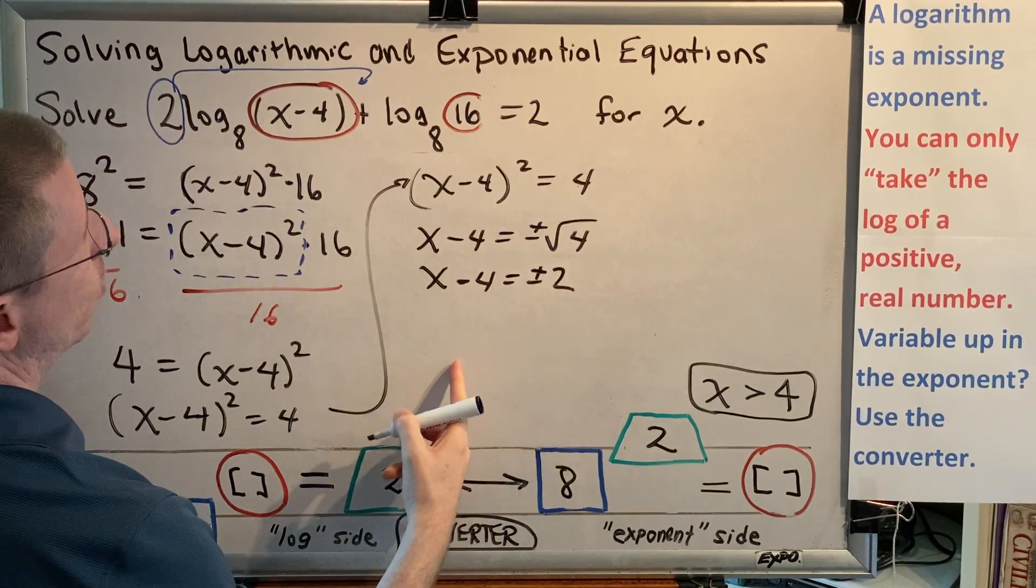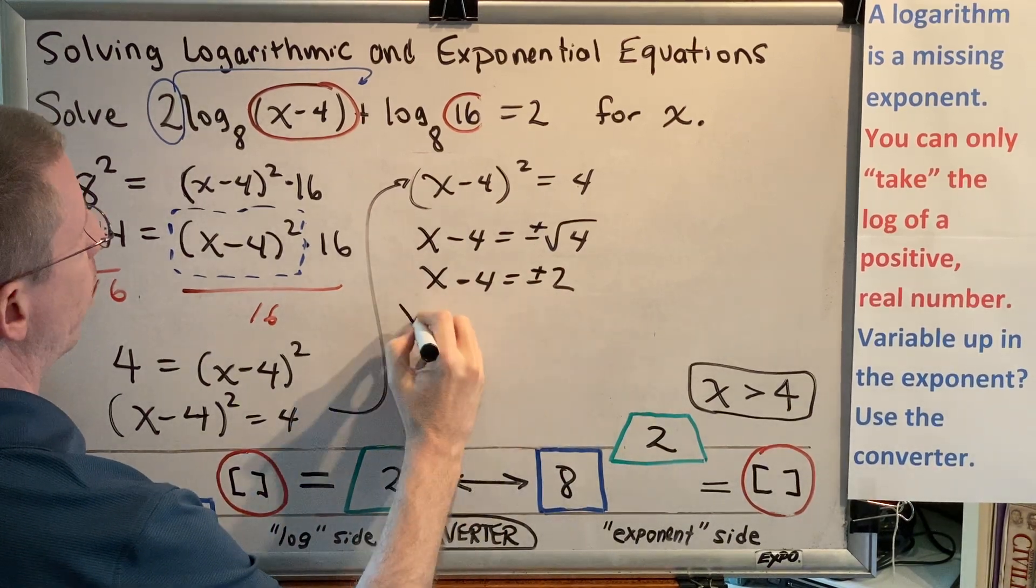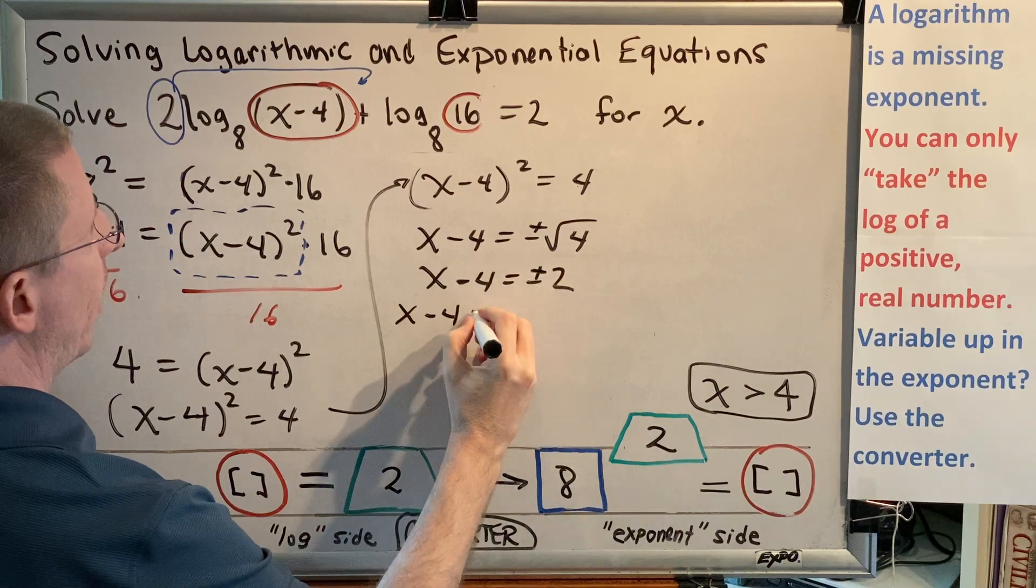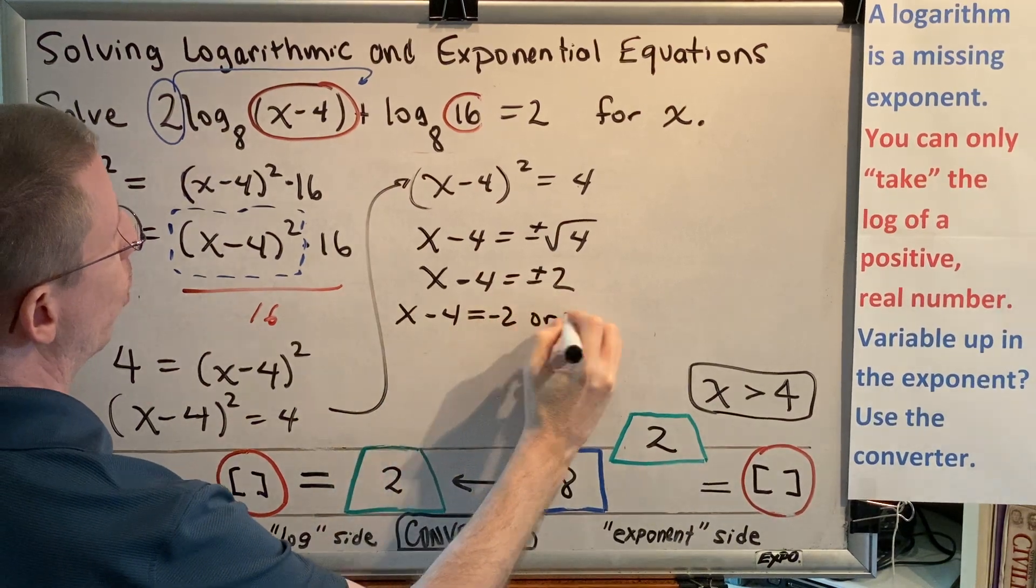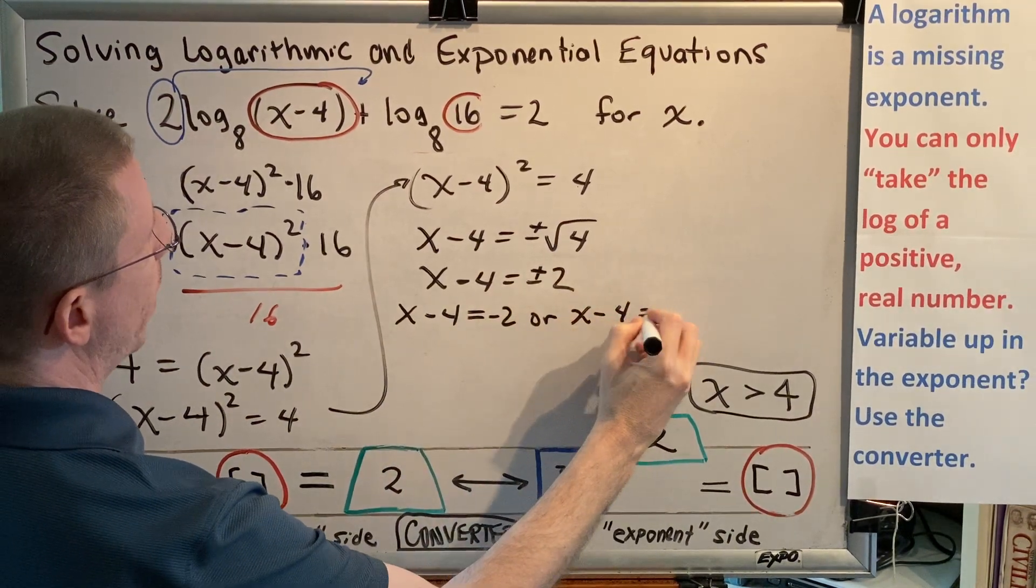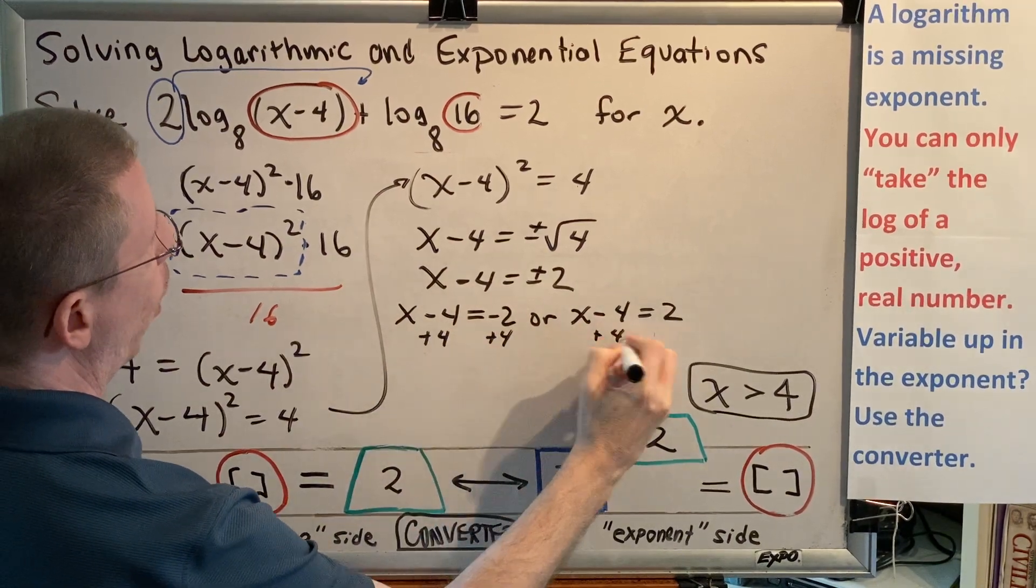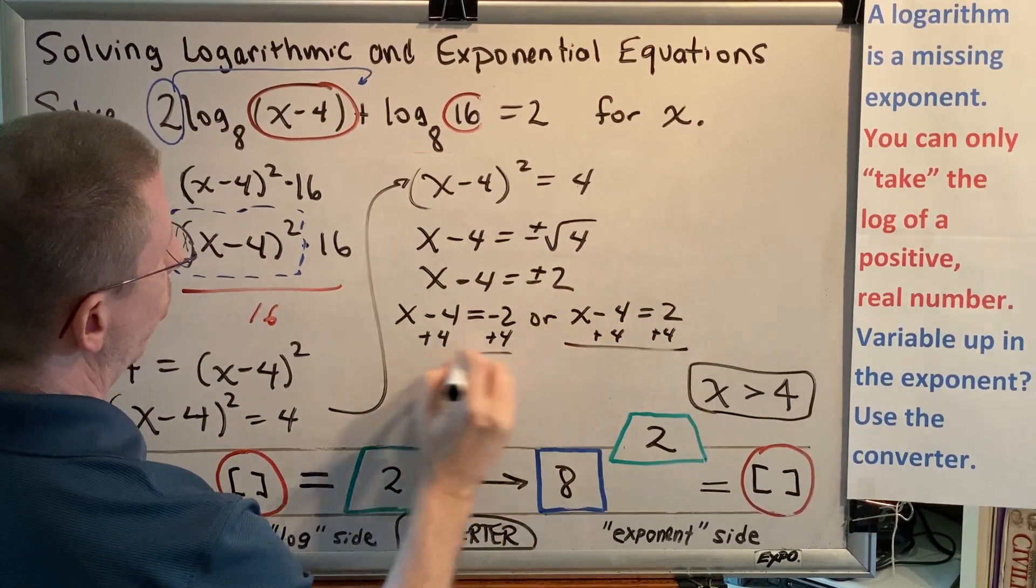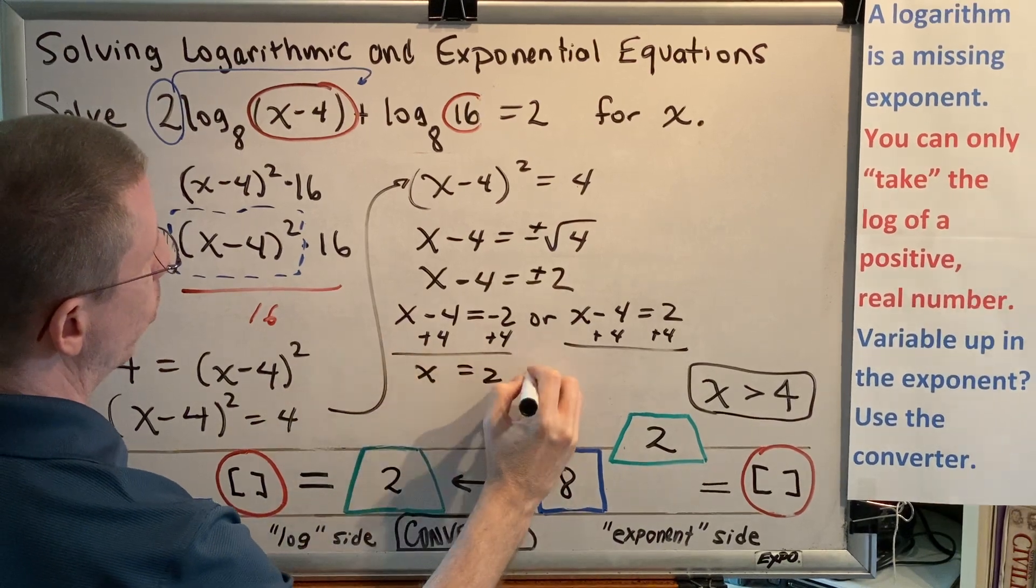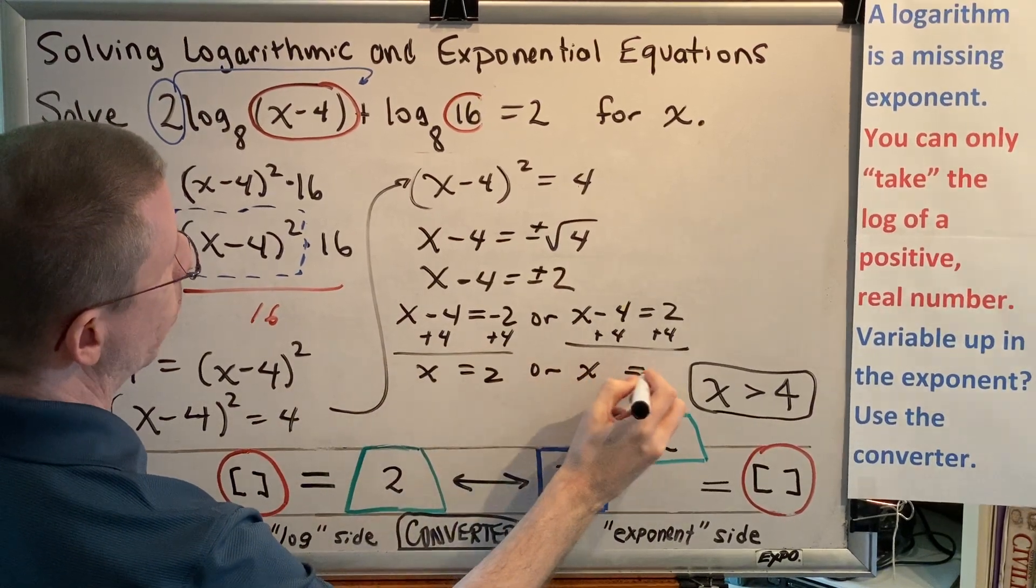And this is actually two statements in one. One equation for the plus, one equation for the minus. So we get x minus 4 equals negative 2 or x minus 4 equals positive 2. And by adding 4 to both sides of both equations, we get x equals 2 or x equals 6.